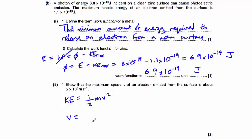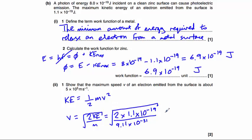So therefore, v is going to be equal to the square root of 2 times the kinetic energy divided by the mass. So we're left with 2 times 1.1 times 10 to the minus 19 divided by the mass of an electron, which is 9.11 times 10 to the power of minus 31 kilograms. Which gives us 4.91 times 10 to the power of 5 metres per second, which is very similar to the 5 times 10 to the power of 5.